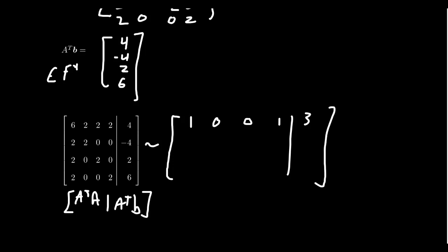Second row will be 0, 1, 0, negative 1, negative 5. You get 0, 0, 1, negative 1, negative 2. And then for the last row, you get 0, 0, 0, 0, and 0.